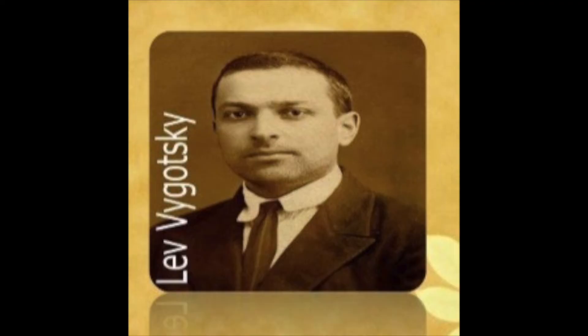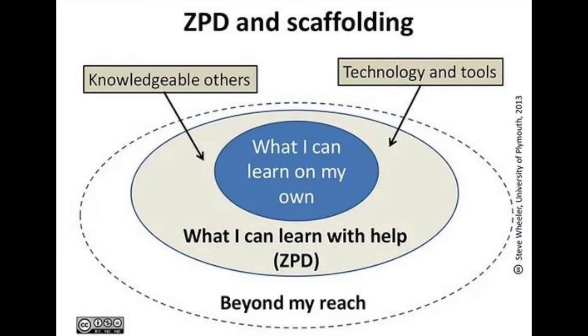My presentation is going to be on Vygotsky's best-known concept, the Zone of Proximal Development. Vygotsky was a Russian psychologist and the founder of Social Culture Theory. The notion of ZPD refers to the space between learners' two developmental levels. The actual developmental level is determined by what they are able to do at the moment independently.